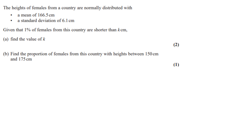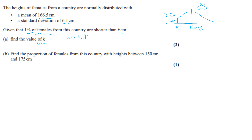This first question is on the normal distribution. We've got heights of females distributed normally with a mean of 166.5 and a standard deviation of 6.1. If we draw that out on our normal curve, the middle is 166.5 with a spread of 6.1. Given that 1% of females are shorter than k, there must be a value k where the area is 0.01. To find k for part a, we do inverse normal on our calculator where X is normally distributed with mean 166.5 and standard deviation 6.1 squared, with area 0.01, and k comes out to be 152.3.